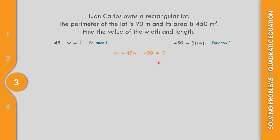Let us solve for W. The sum equals the value of B, which is negative 45. The product is 1 times 450 equals 450. Think of factors where the product is 450 and the sum is negative 45. Since both are negative: the factors are negative 30 and negative 15. Negative 30 times negative 15 equals 450, and their sum is negative 45.